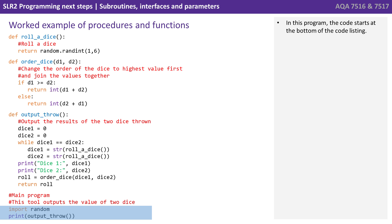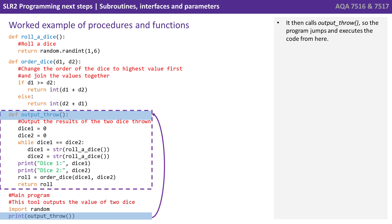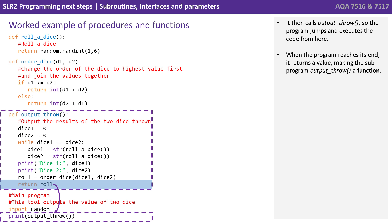Now we're looking at a language specific example here as opposed to pseudocode. So we're now working in Python. In this program, the code starts at the bottom of the code listing. It then calls output throw. So the program jumps and executes the code from here. When the program reaches its end, it returns a value, making the subprogram output throw a function.